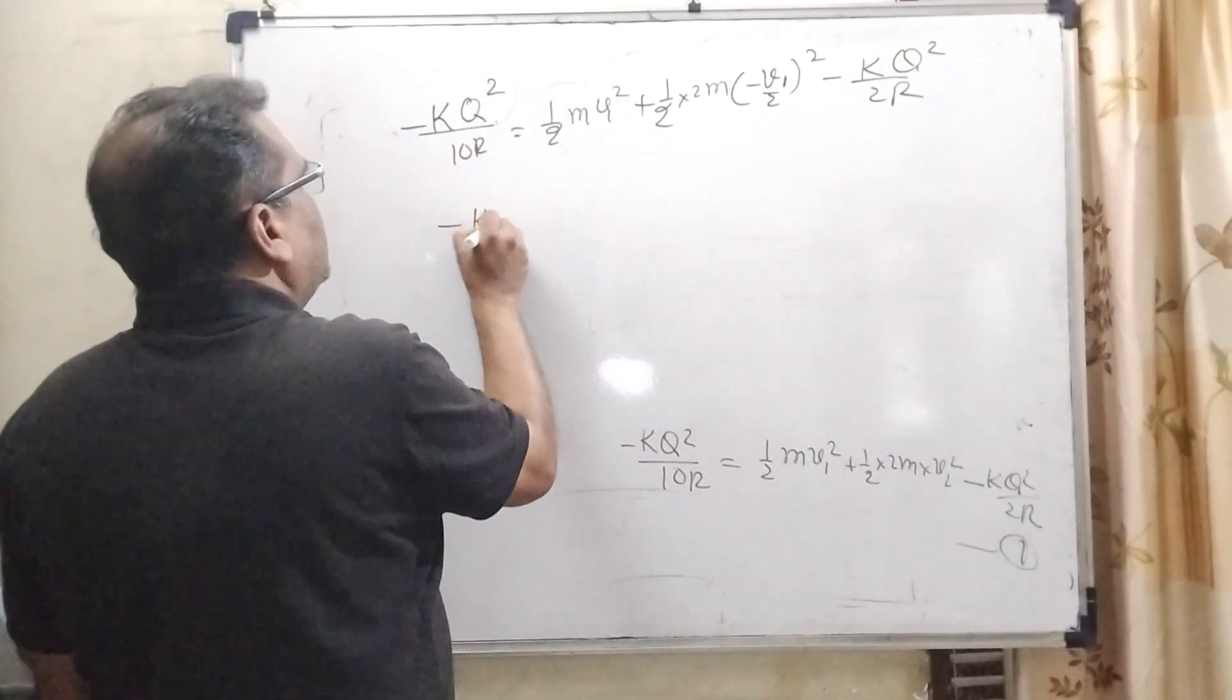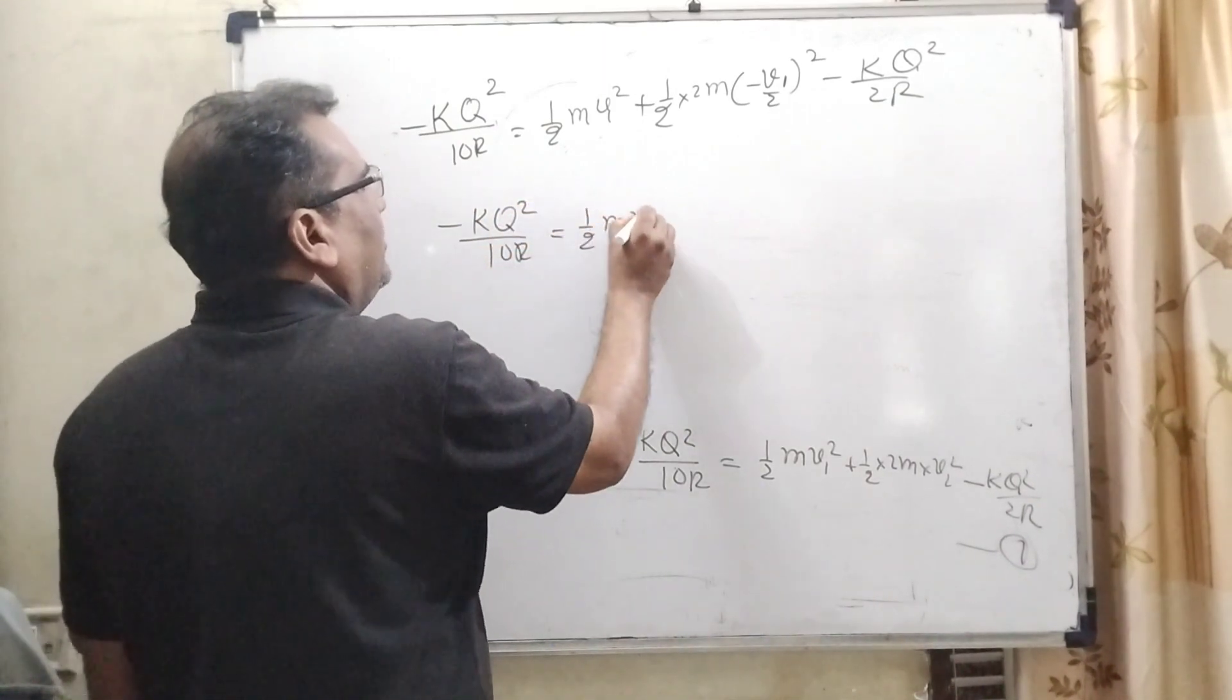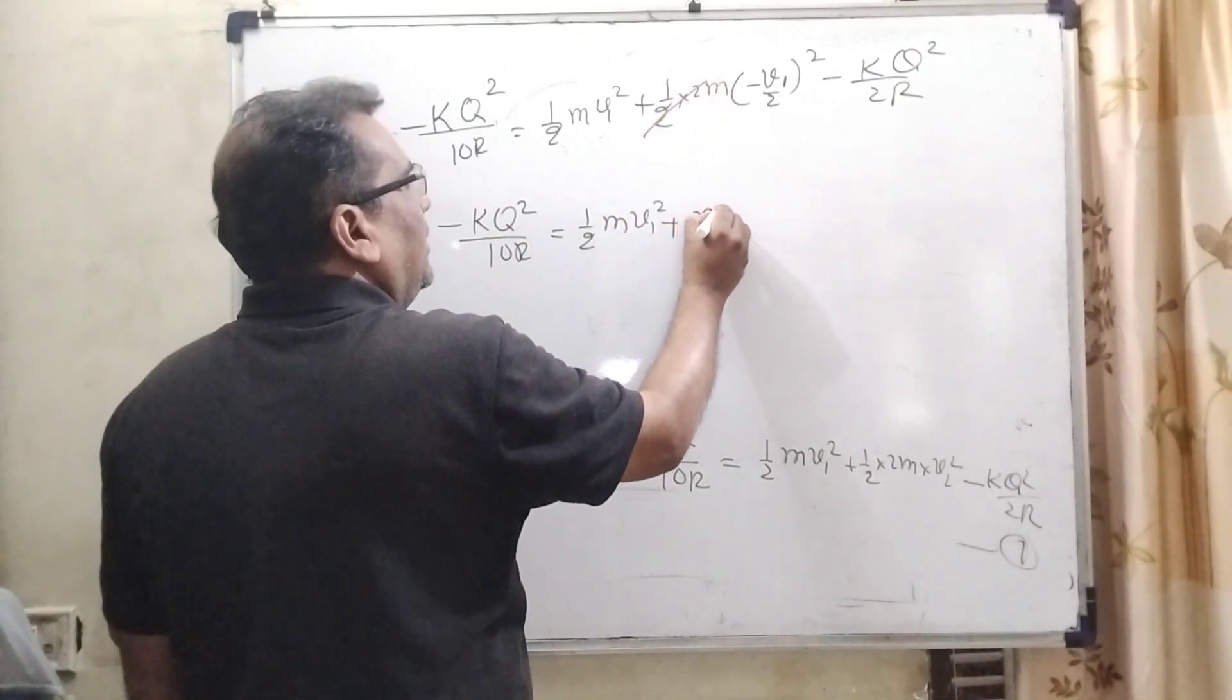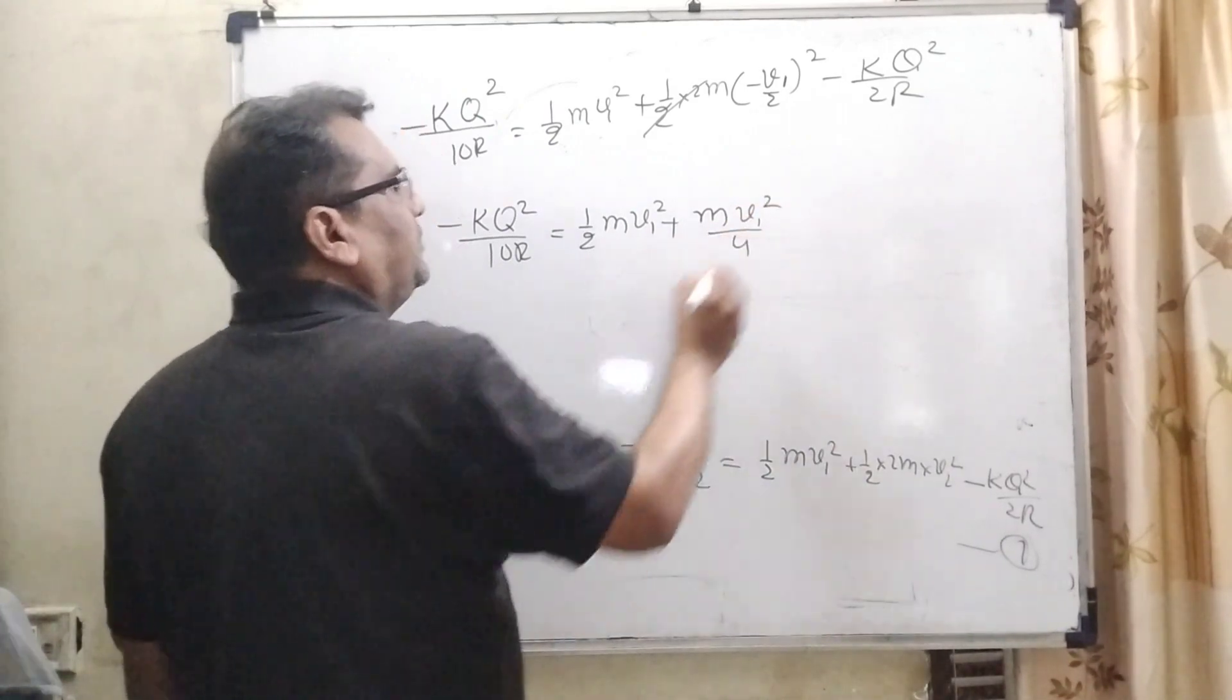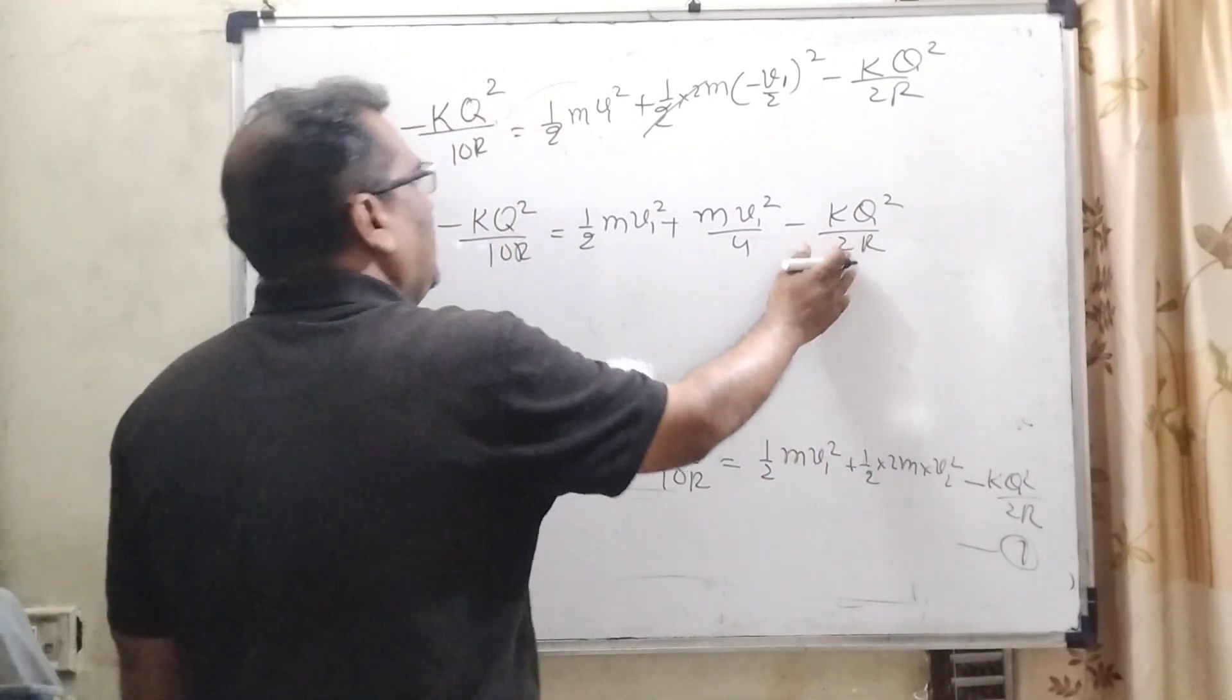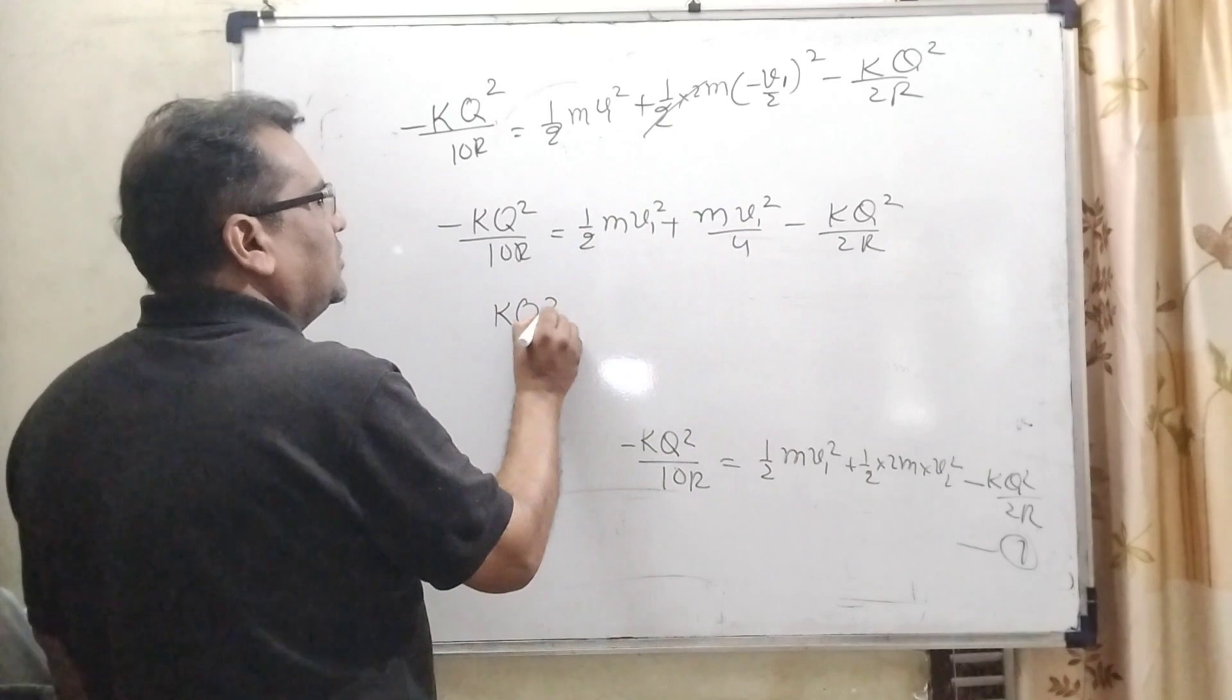Now, minus KQ square upon 10R. Now, minus KQ square upon 10R, 1 by 2m V1 square, 2 to cancel out, M V1 square by 4 minus KQ square upon 2R. This values transposing to the left side becomes KQ square upon 2R minus KQ square upon 10R.